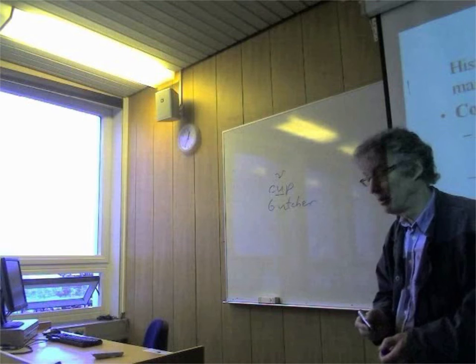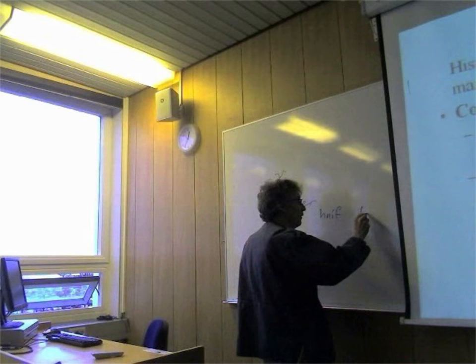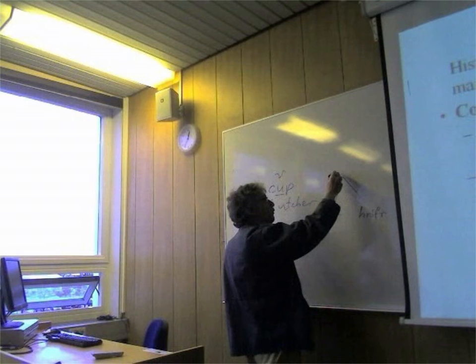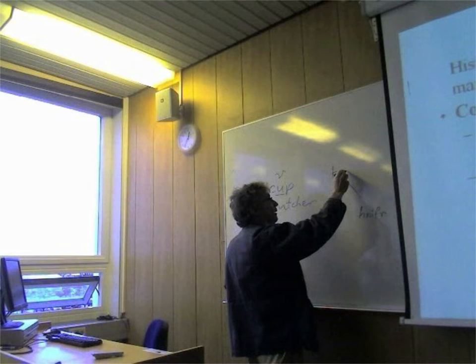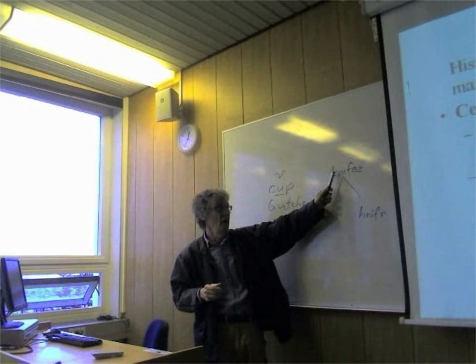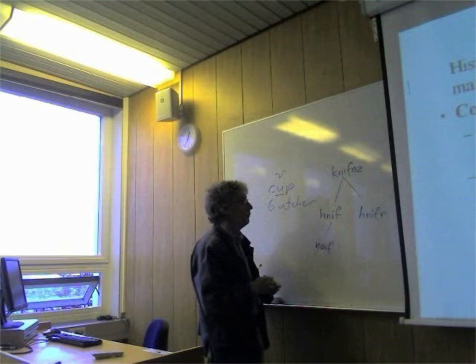They both came from an older form - something like 'knivas', an old Germanic form which hasn't been found written. It's an old Germanic form which splits up into Old English. We still show this in modern English today, which is rather silly because it hasn't been pronounced for more than 600 years, but we still put it there. One of the problems of English spelling.